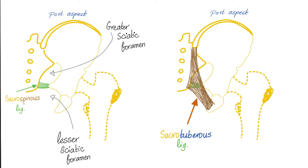What are the structures that pass through the greater sciatic foramen? A wonderful muscle known as piriformis. Above the piriformis muscle: superior gluteal artery, superior gluteal vein, superior gluteal nerve. Below the piriformis muscle: inferior gluteal artery, inferior gluteal vein, inferior gluteal nerve. Don't forget the sciatic nerve, as well as the posterior femoral cutaneous nerve, and two small nerves — nerve to the obturator internus and nerve to quadratus femoris, both branches of the sacral plexus. Then you have internal pudendal artery, internal pudendal vein, and pudendal nerve.